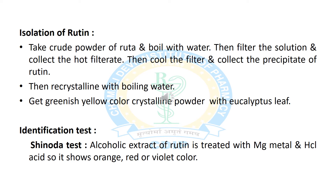Now we will discuss the isolation method for rutin. First, we take crude powder of Ruta graveolens and boil it with water. After that, we filter the solution, collect the hot filtrate, and then cool the filtrate to collect the precipitate of rutin. We then recrystallize the rutin by boiling water, and collect a greenish-yellow color crystalline powder of rutin.